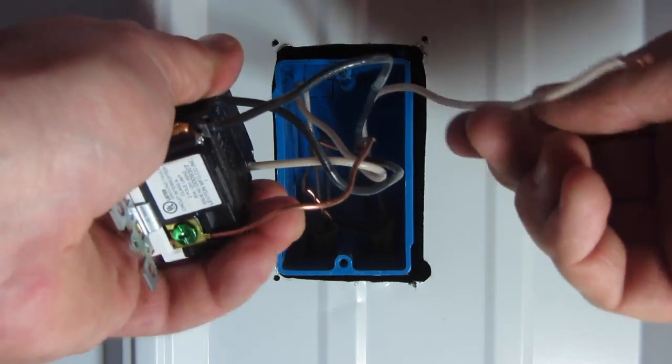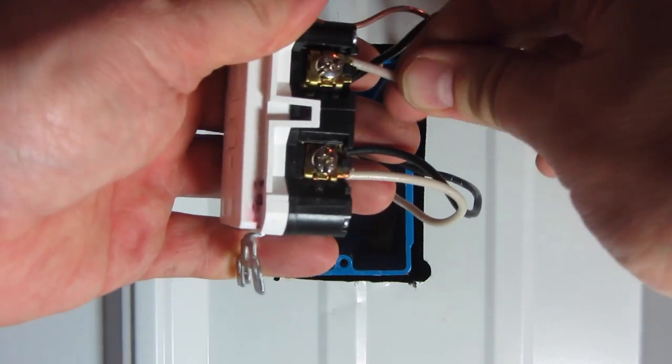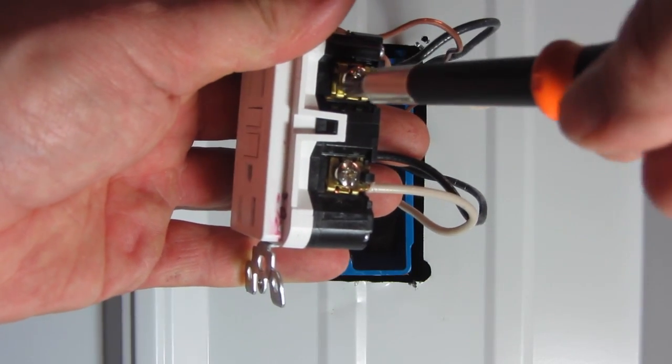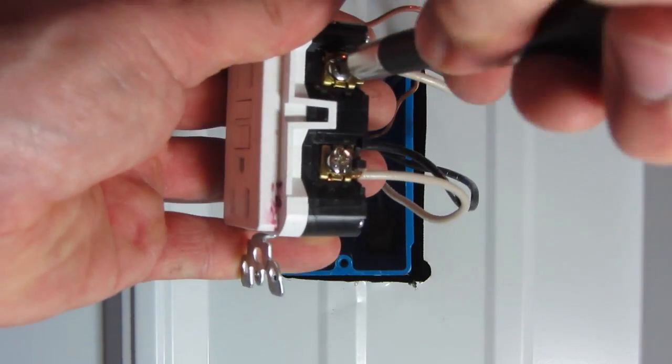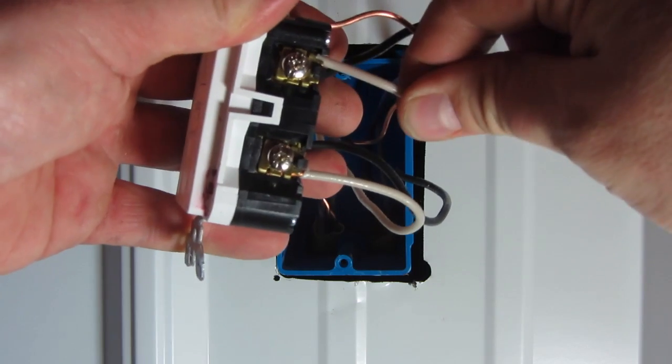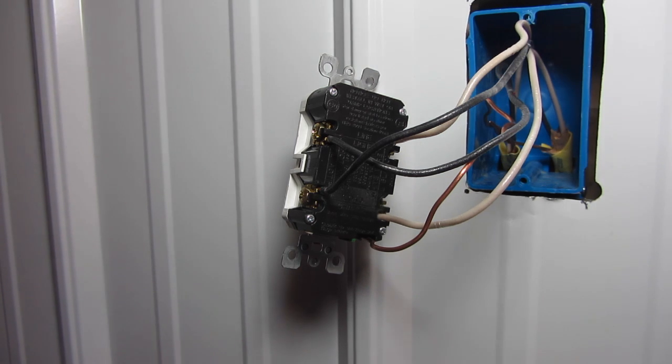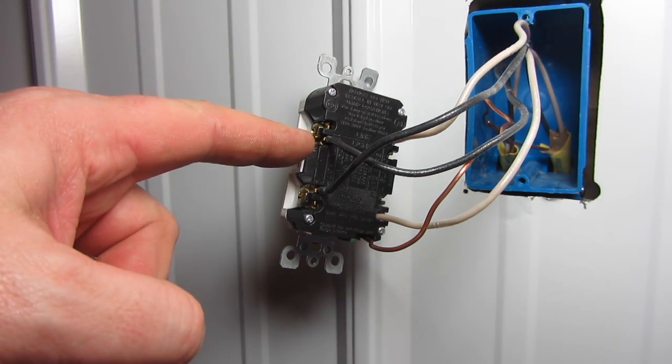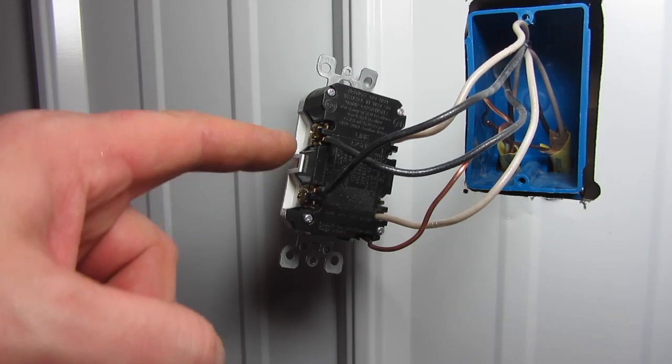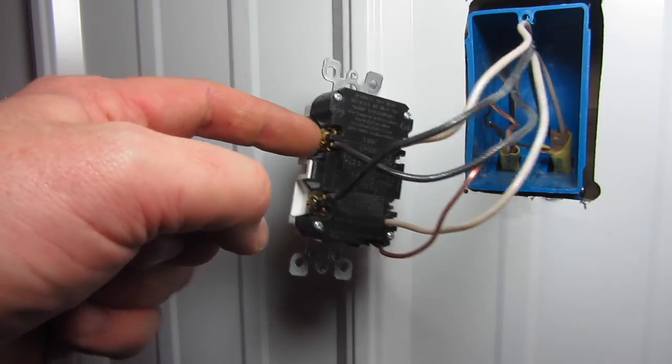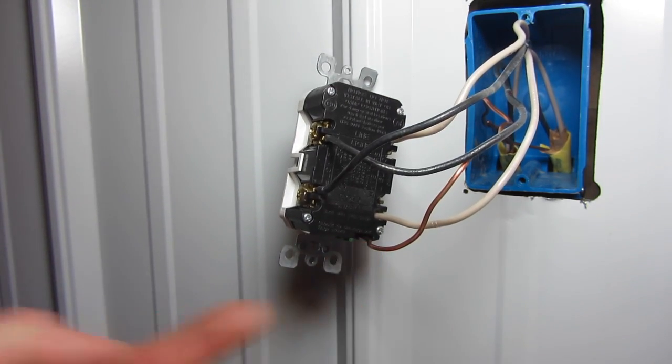Then I take the white to the silver. Once you feel the terminal screws are tight enough, go ahead and double check to make sure the line is going to the line and the load is going to the load side. Also, double check to make sure the black is going to the gold screws and the white is going to the silver screws. Also, check the tightness on your ground as well.